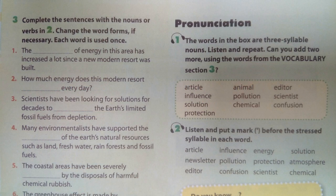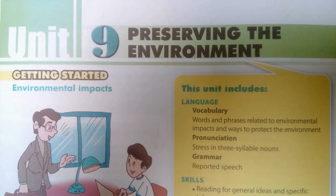The words in the box are three-syllable nouns. Can you add two more using the words from the vocabulary section? Article, animal, editor, influence, pollution, scientist, solution, chemical, confusion, protection.